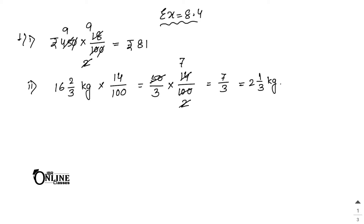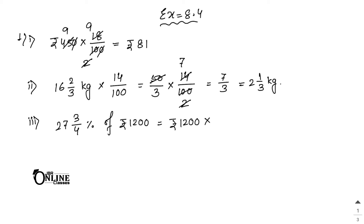Number 3: 27¾% of ₹1200. First convert 27¾ to an improper fraction: 27 × 4 = 108, then 108 + 3 = 111, so it is 111/4. So we have 111/4 percent of ₹1200.